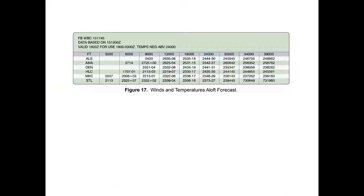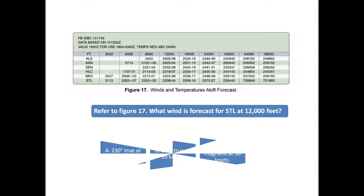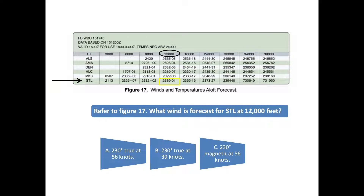Refer to the chart in Figure 17. What wind is forecast for St. Louis (STL) at 12,000 feet? You can see from the chart the numbers 2339-04 for STL at 12,000 feet. The first two numbers indicate true wind direction speed. So in this case, add a 0 to the first two numbers of 23 to get the wind direction of 230.